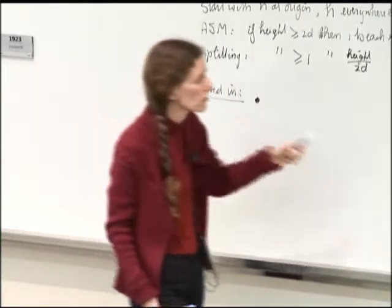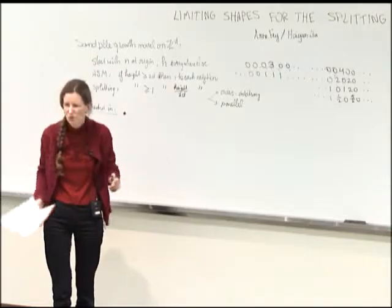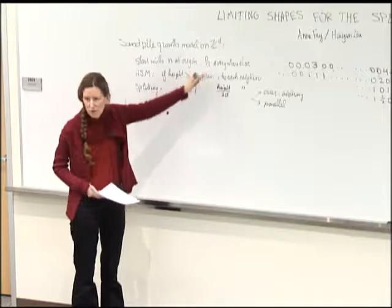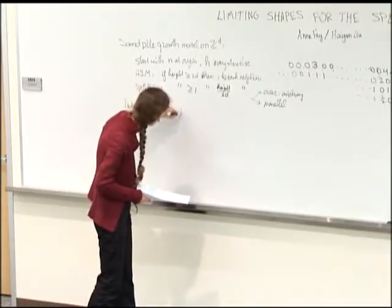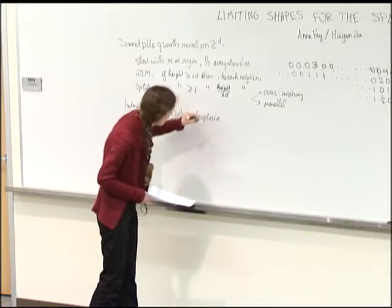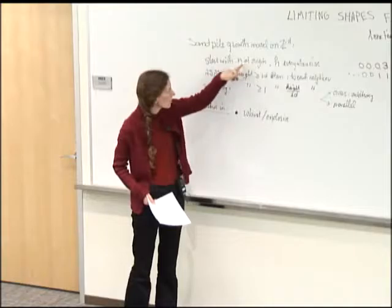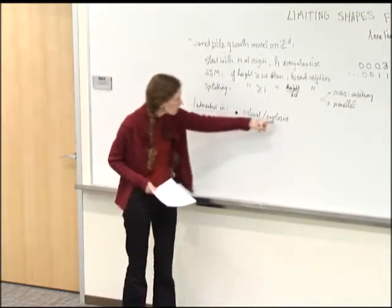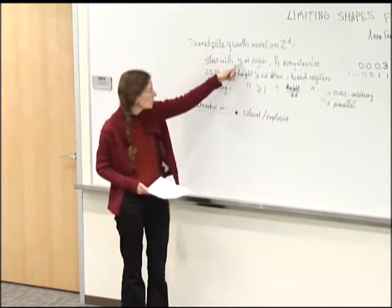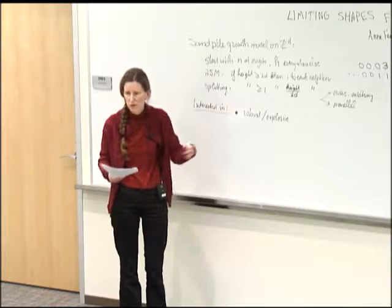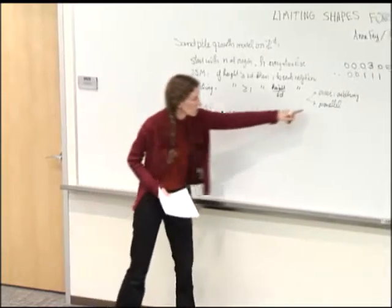We want to know: if we put a huge amount at the origin and spread it out, will it stop at some time? We make a distinction. Robust means there is a value of H such that no matter how large we make N, it will always stop eventually. Explosive means if H is another value, there is some threshold N such that if we put that N there or more and start splitting, it will never stop.